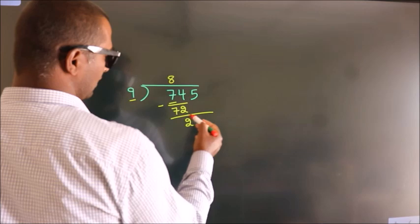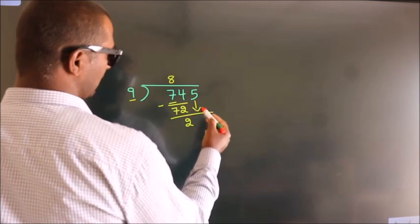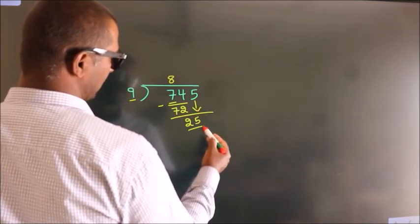After this, bring down the beside number. So 5 down. So 25.